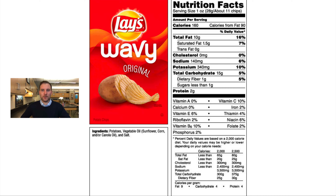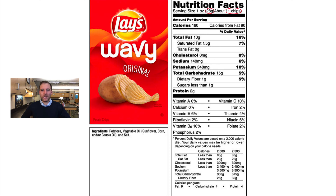On the label, the serving size is one ounce, which is 28 grams, equivalent to about 11 chips. I've tested this theory — it's not possible to just have one serving size of potato chips; you end up eating way more. The key connection is that 28 grams of potato chips, which is a mass, is equal to about 11 chips, which is a quantity. That's exactly what a molar mass does: it connects mass and quantity.